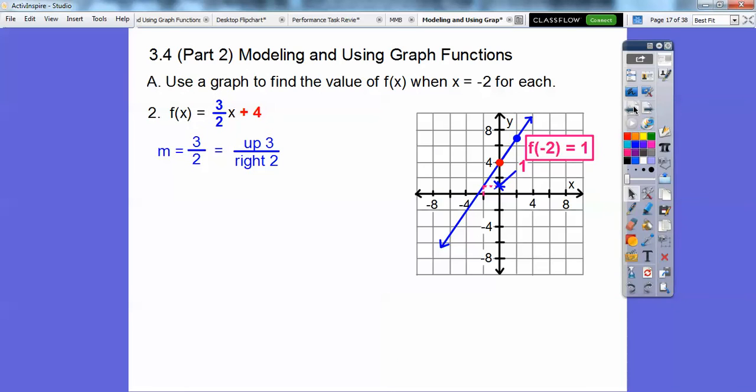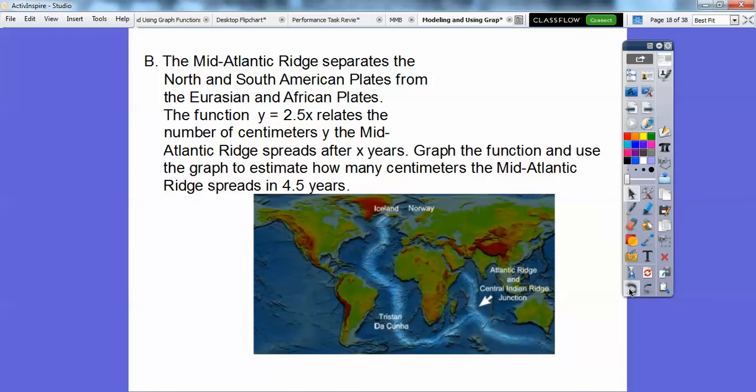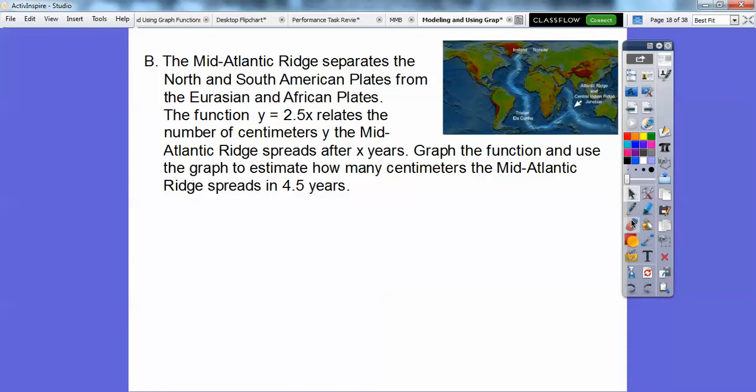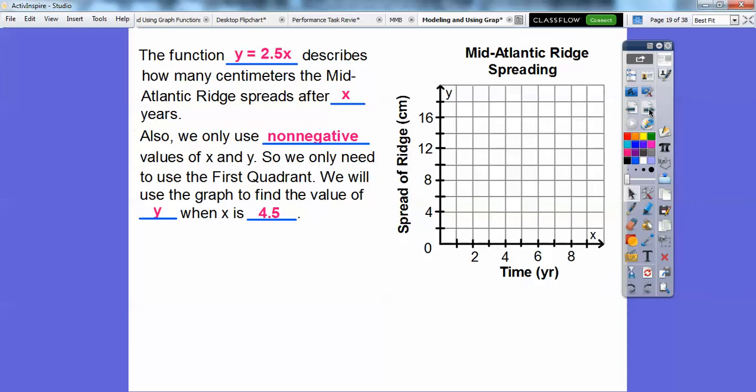Let me go put that back here. So the function y equals 2.5x relates the number of centimeters y that the Mid-Atlantic Ridge spreads after x years. So let's graph that function and use the graph to estimate how many centimeters the Mid-Atlantic Ridge spreads in 4.5 years. Remember that the y is the spread right here and the x is how many years. So here we're going to go ahead and make this graph. The function y equals 2.5x describes how many centimeters the Mid-Atlantic Ridge spreads after x years.